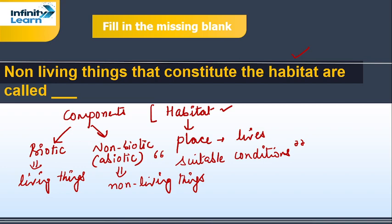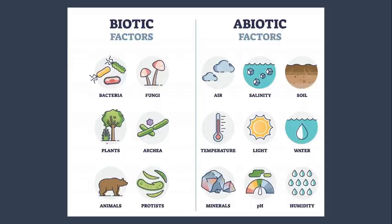Non-biotic component comprises of all non-living things. So in this question, non-living things that constitute the habitat are called — that means we need to identify which type of component it is. It falls in the category of abiotic component.